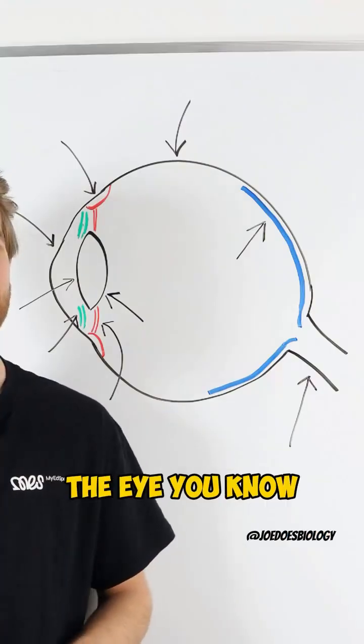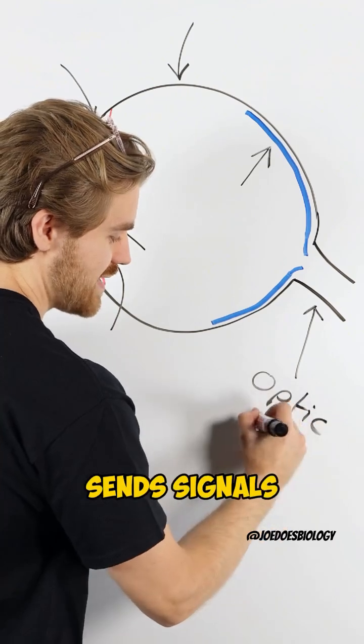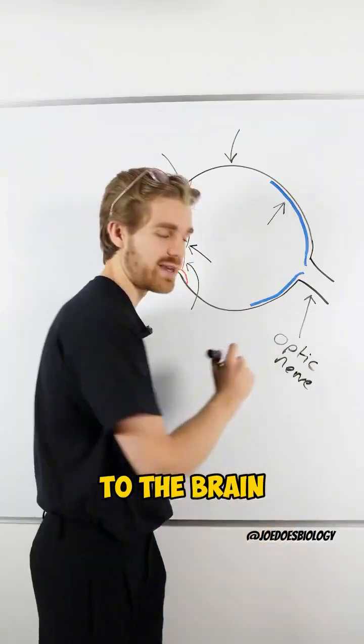Let's see how many parts of the eye you know. This is the optic nerve. The optic nerve sends signals to the brain.